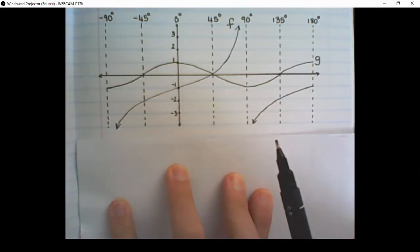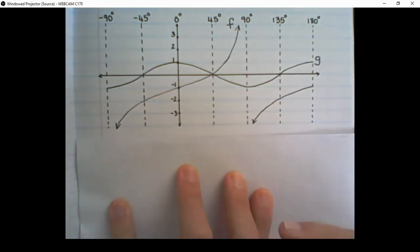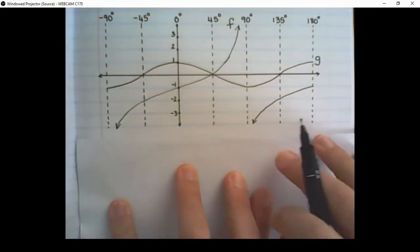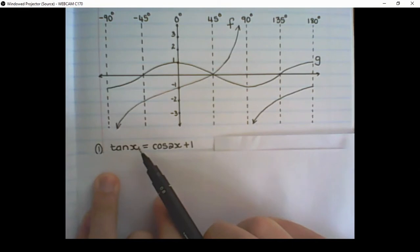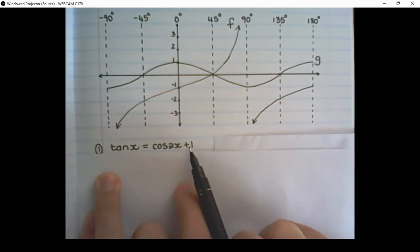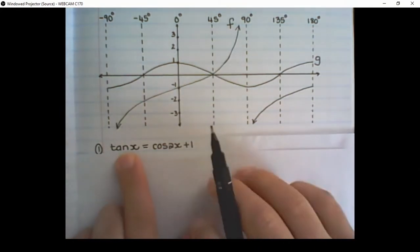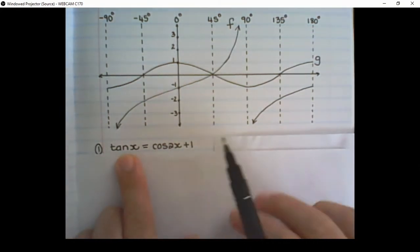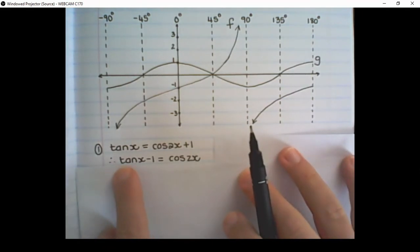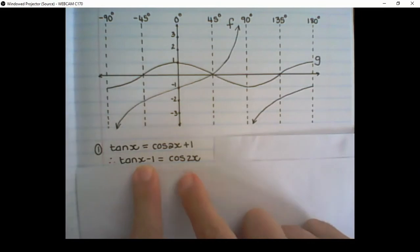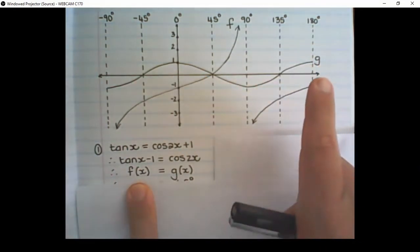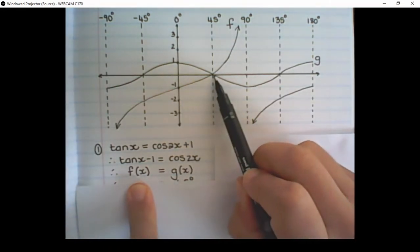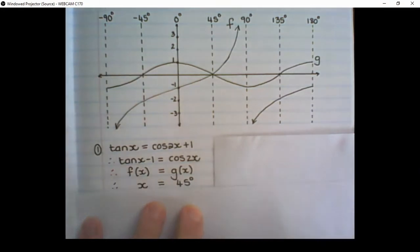The answers will be in terms of x. For the first question: for which values of x is tan x = cos 2x + 1? In the diagram we don't have tan x alone, so if I move the plus 1 over, I get tan x - 1 = cos 2x, that is f(x) = g(x). Looking on the graph where the two are equal — they intersect only at one place — x = 45 degrees.